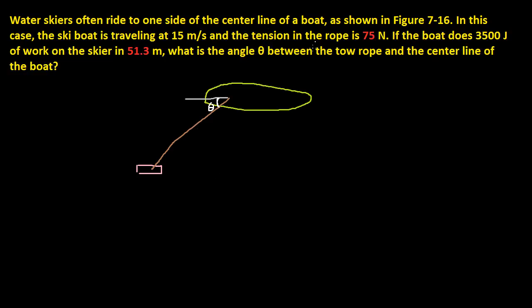Well basically what this is saying is if the boat goes this way horizontally, 51.3 meters. So from wherever this started up until here, this is going to be 51.3 meters. And after this much, 3,500 joules of work has been done.